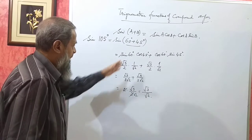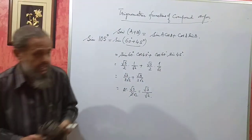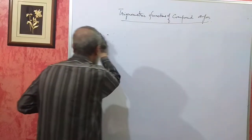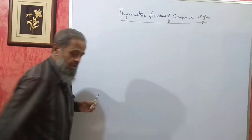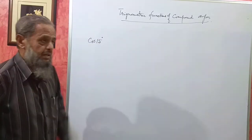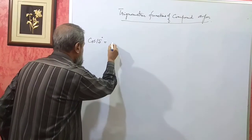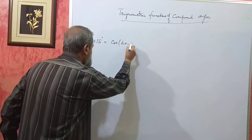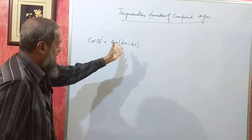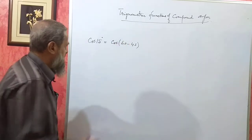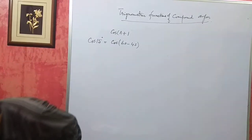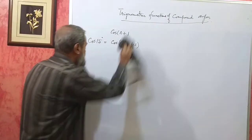Now, this is how it can be done. To give you one more example, find the value of cos 15 degree without using a table or calculator. Again, this can be written as either cos of 60 degree minus 45 degree, since 60 minus 45 is 15, or it can be written as 45 minus 30 also. You get the same final answer, whatever you choose.